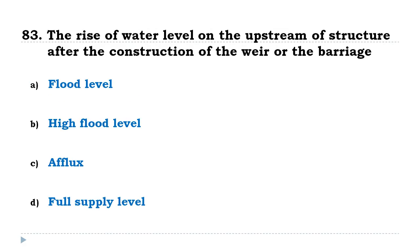The rise of water level on the upstream of a structure after the construction of the weir or the barrage is known as the afflux.